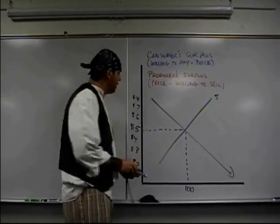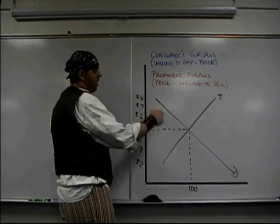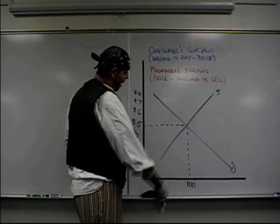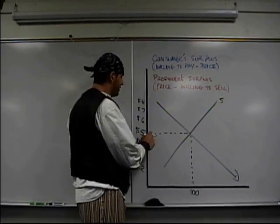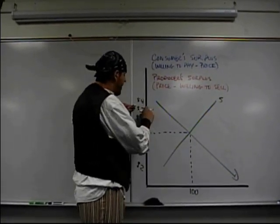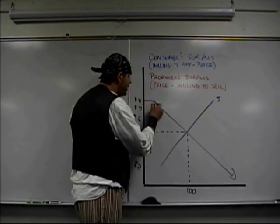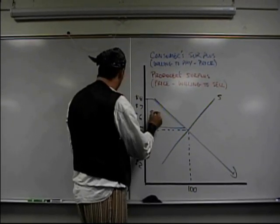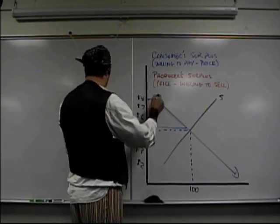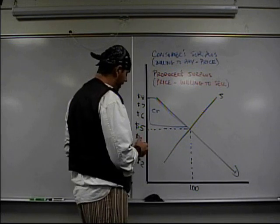It's right here on your graph. Take a look. Somebody's willing to pay $8 for whatever product this is, but they didn't — they paid $5. Somebody's willing to pay $7, they paid $5, $6, and $5. This whole area here is consumer surplus — what they're willing to pay and what they actually did pay.